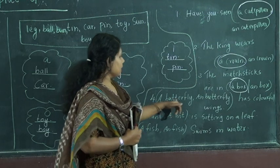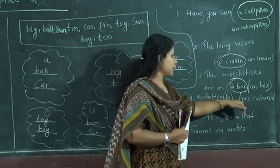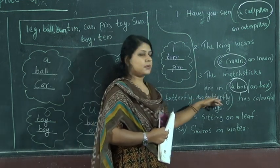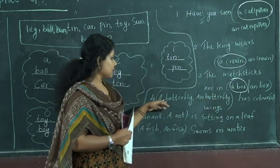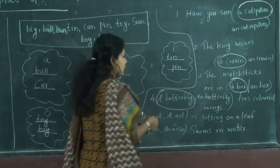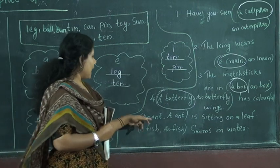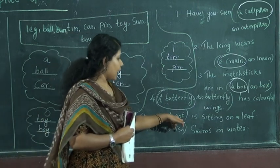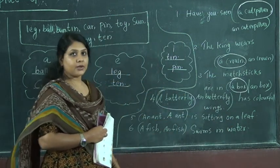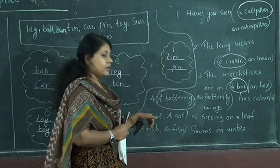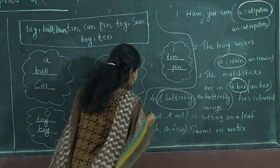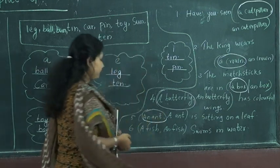Fourth one: A butterfly or an butterfly has colorful wings. B is the first letter — not a vowel — so A butterfly is the right one. Circle that word. Fifth: An ant or a ant is sitting on a leaf. First letter A is a vowel, so AN ant is the right one. Circle that word.